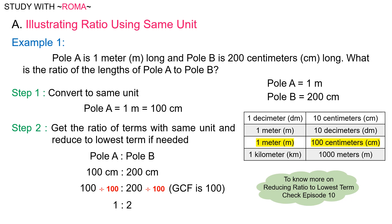1 and 2 have no other factor except 1. Therefore, 1 is to 2 is in its lowest term.